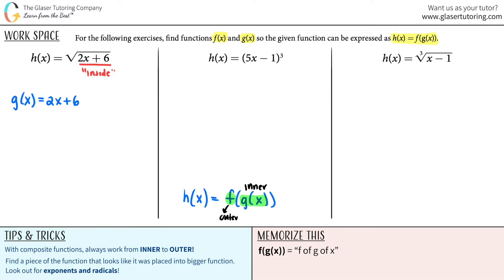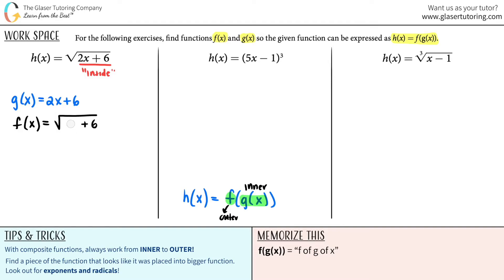To find the outer function, that's the f of x function. You literally rewrite the whole function — 2x plus 6 — and mentally erase what you said was the g of x function, replacing it with just an x. Keep in mind the variable letters have to be consistent. Clean it up, and you get f of x equals the square root of x. That's it! The hardest part is finding the inner function, and then everything falls into place.